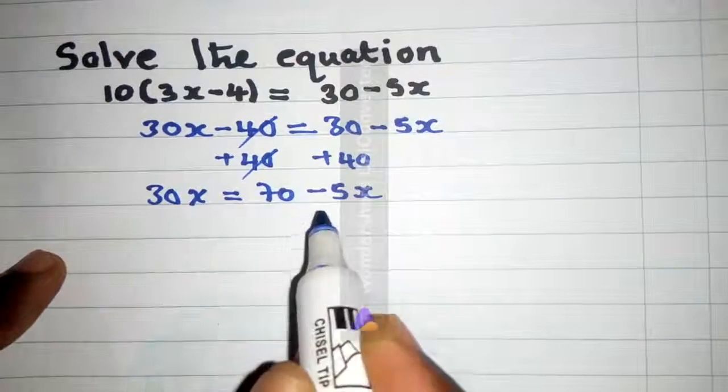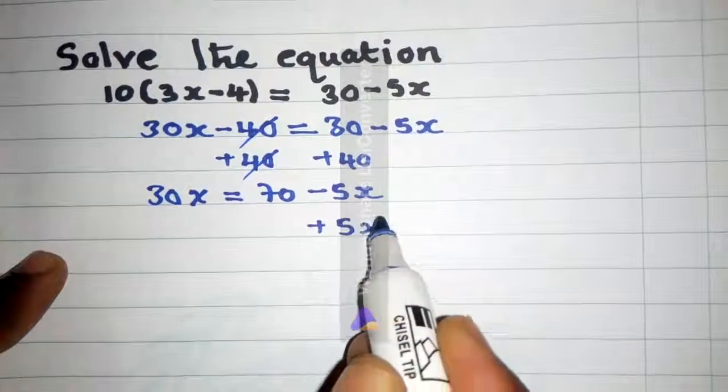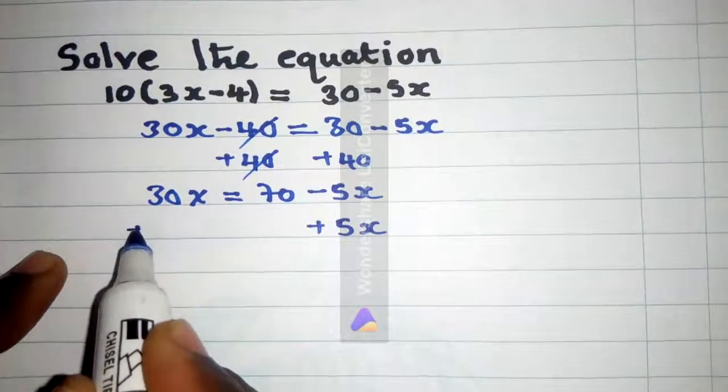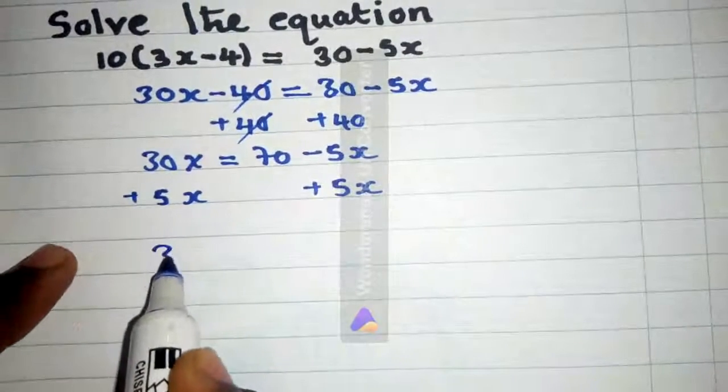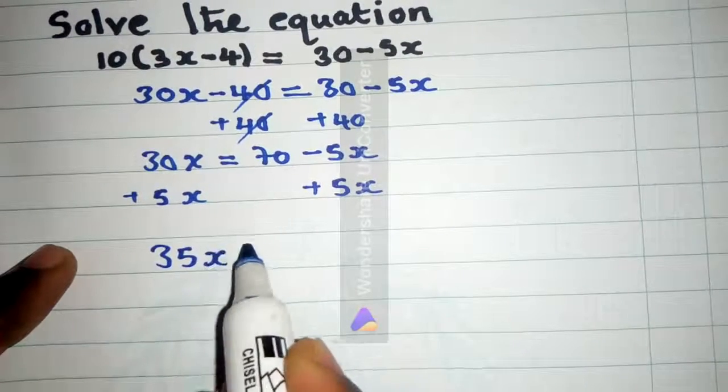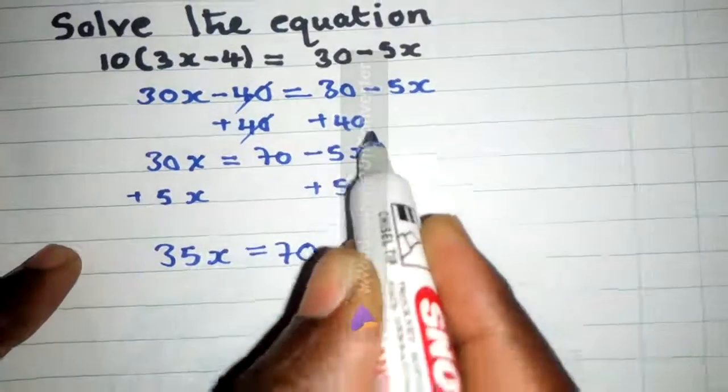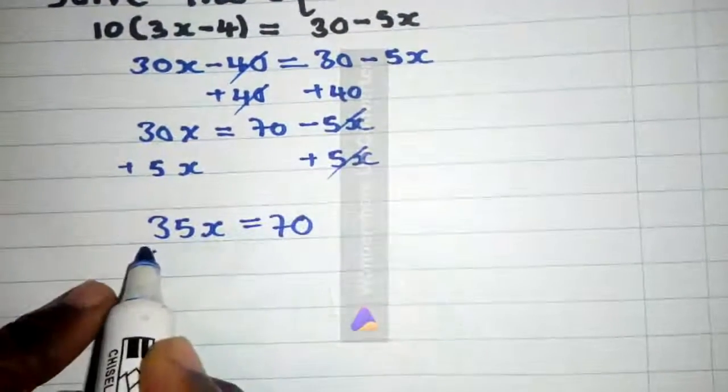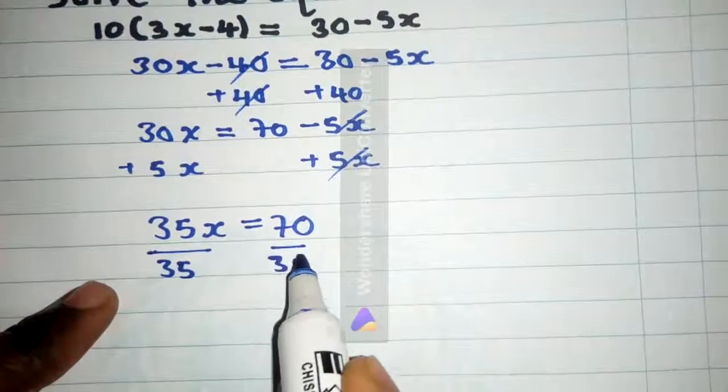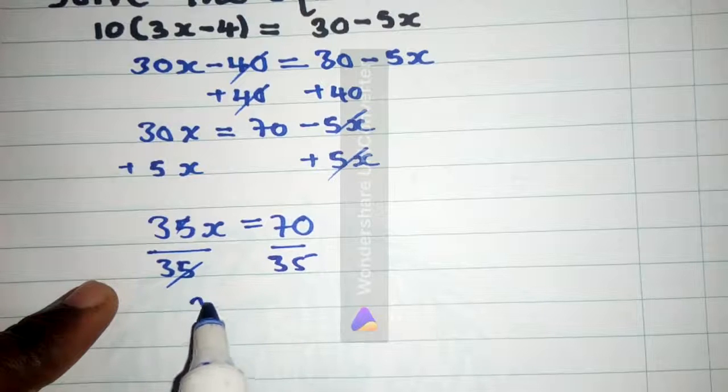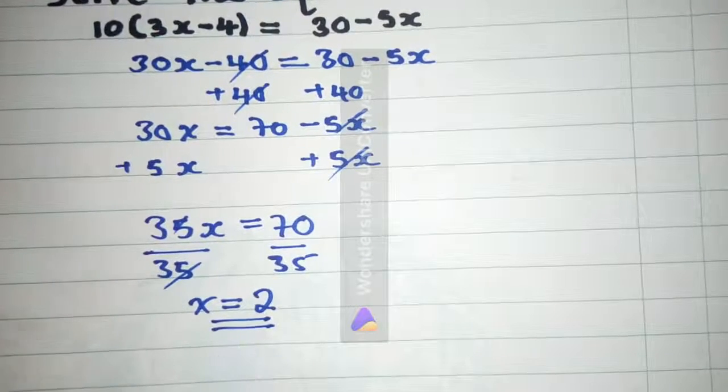Then we also add negative 5x, both sides. We have 35x is equal to 70. This and this will cancel. We can divide by 35, by 35. And the value of x is equal to 2. So the value of x is 2.